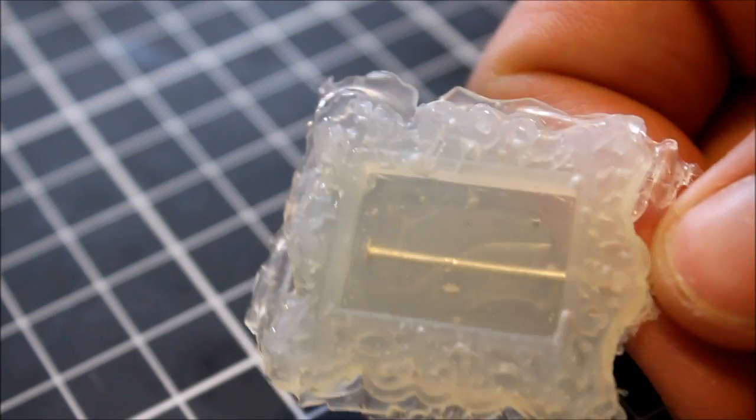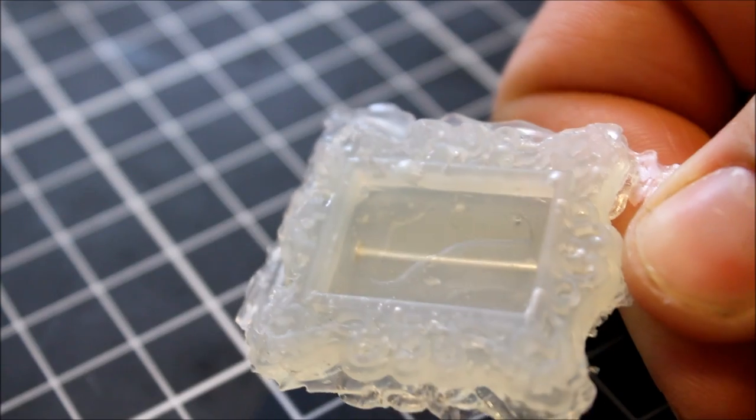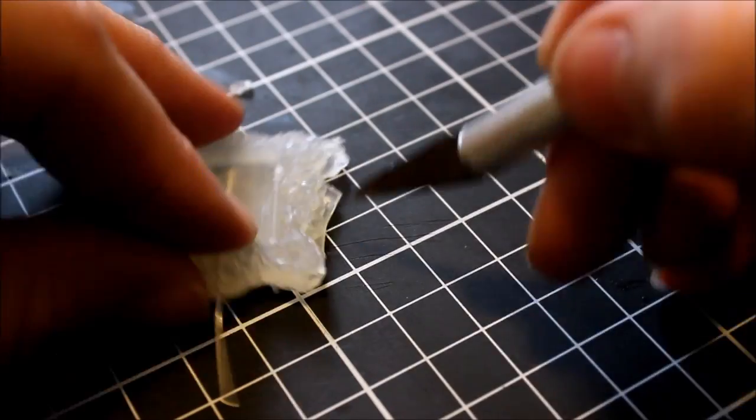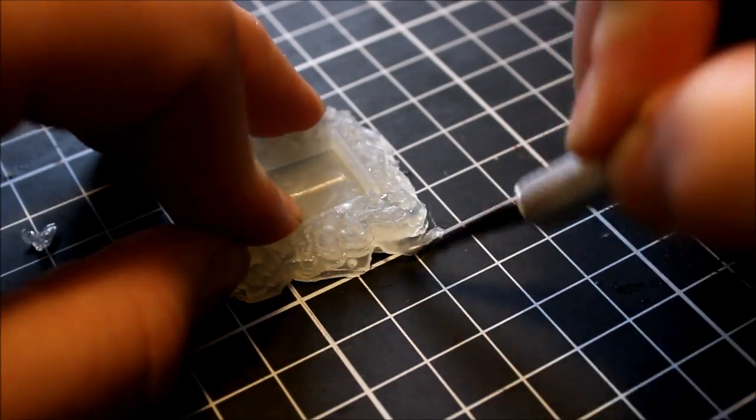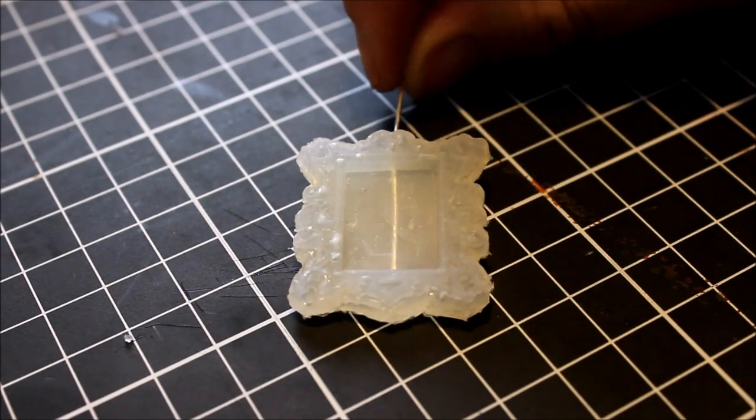As you can see there is a little bit of an overflow from when we filled our molds. Go ahead and cut that away with a crafting knife. Now if you're not confident with a crafting knife, please ask an adult to help you and be careful not to cut yourself. Once you're satisfied with your little frame, go ahead and select a color of acrylic paint.